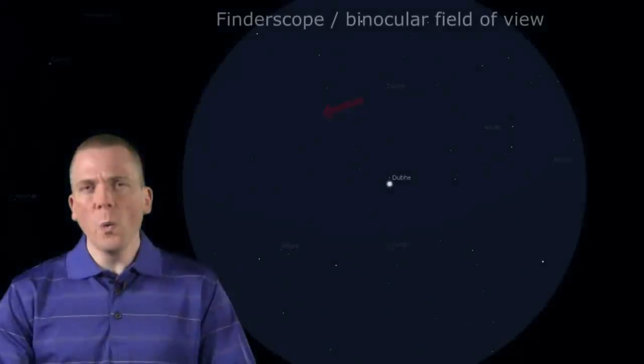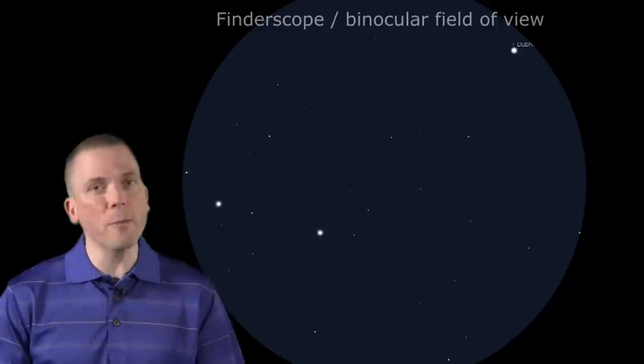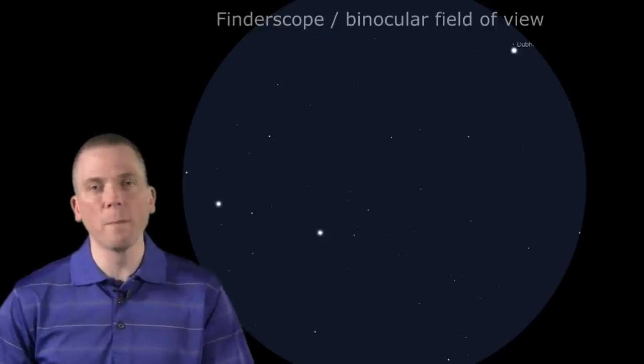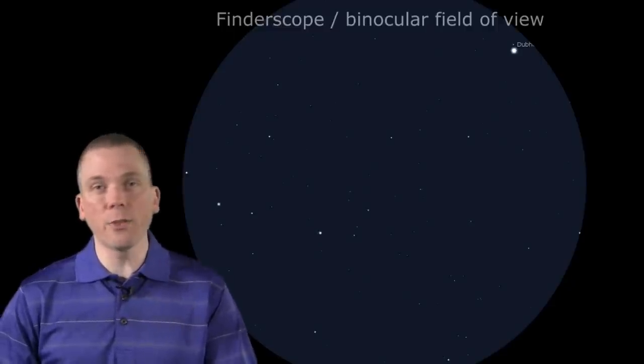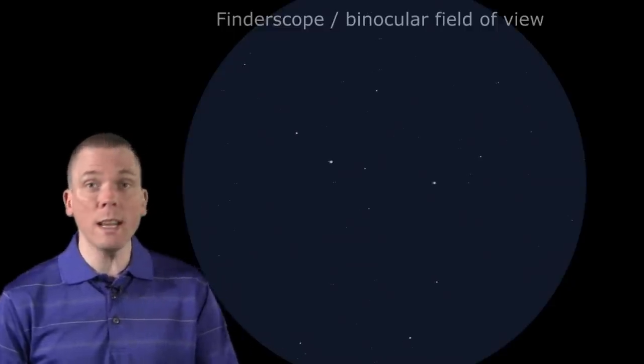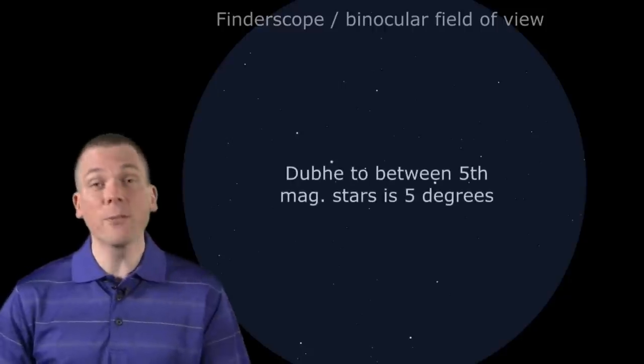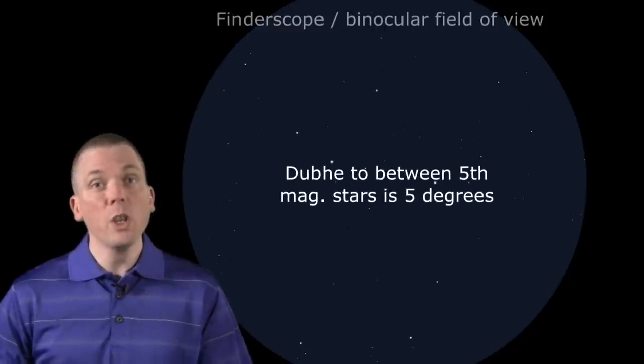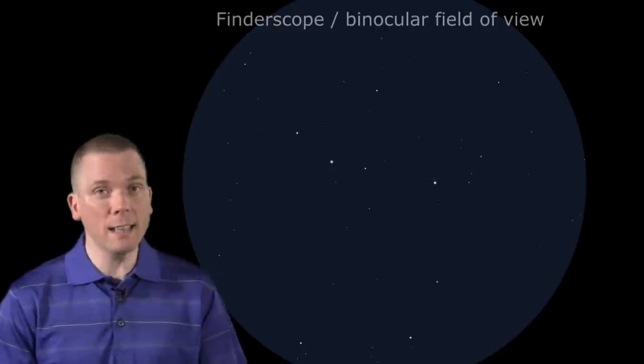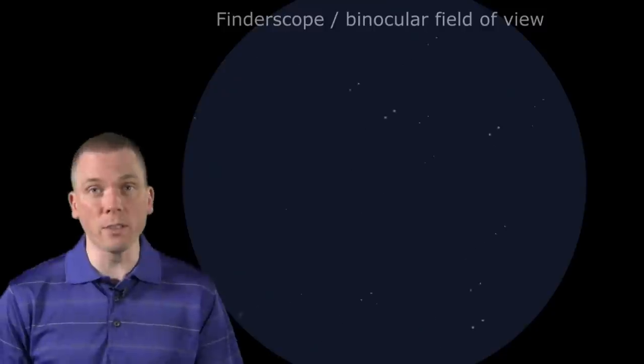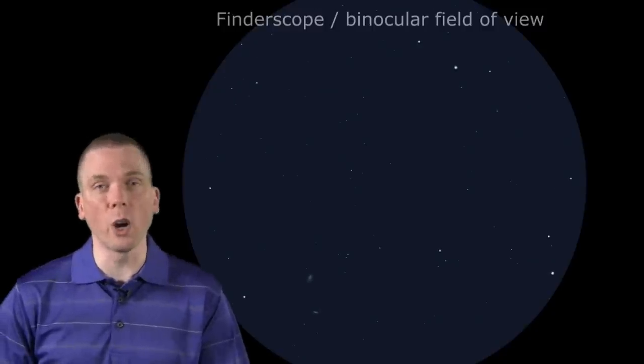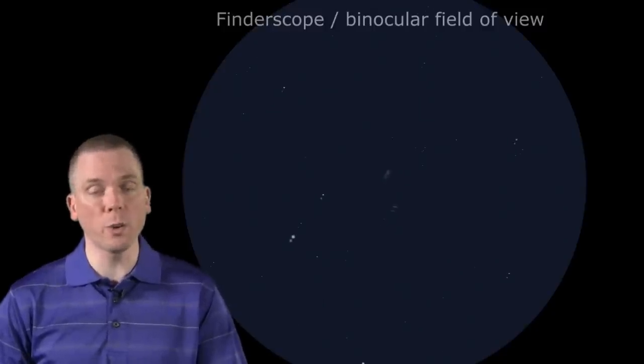Start at Dubhe. With a 5 degree finderscope field of view, these two 5th magnitude stars should be visible. Draw an imaginary line from Dubhe exactly between these two stars, that's 5 degrees of distance. You will need to move in exactly that direction, another 5 degrees, just short of the star 24 Ursa Majoris.